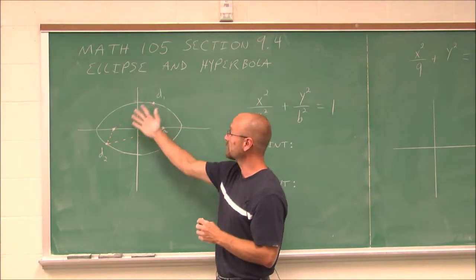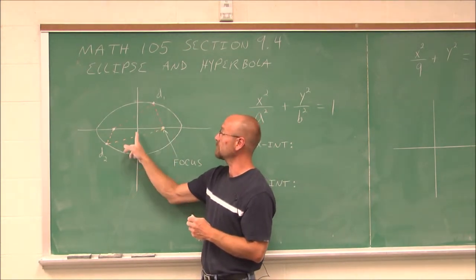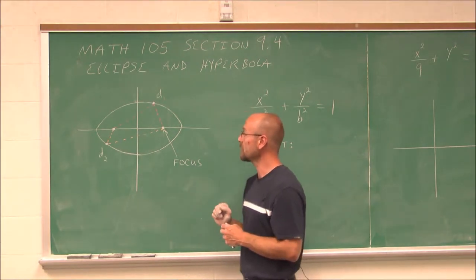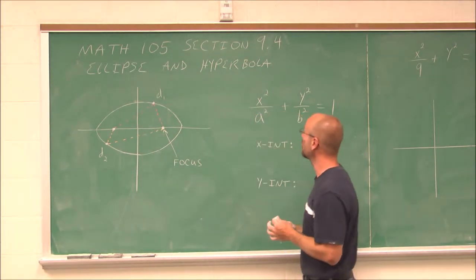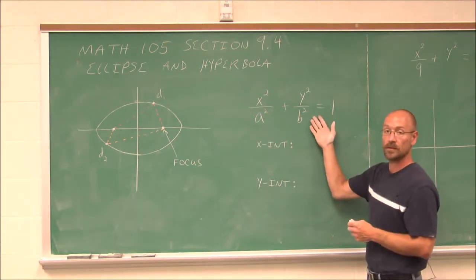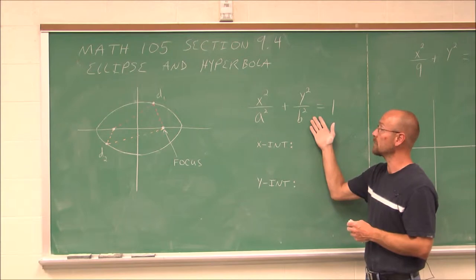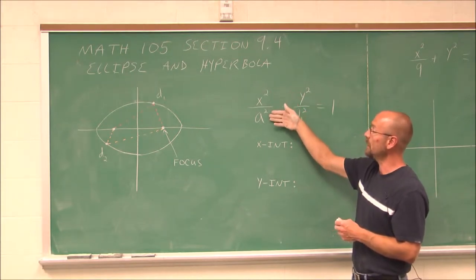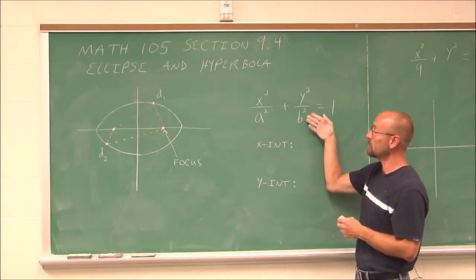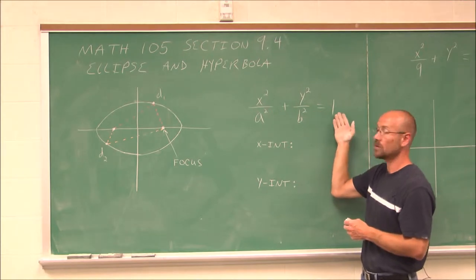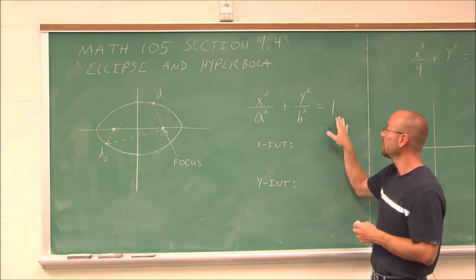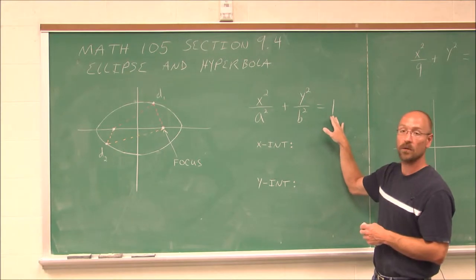For this example, our ellipse is centered at the origin. When we have an ellipse centered at the origin, its standard form looks like this: x squared over a squared plus y squared over b squared equals 1. When it comes to an ellipse or a hyperbola, we always want to set it equal to 1.